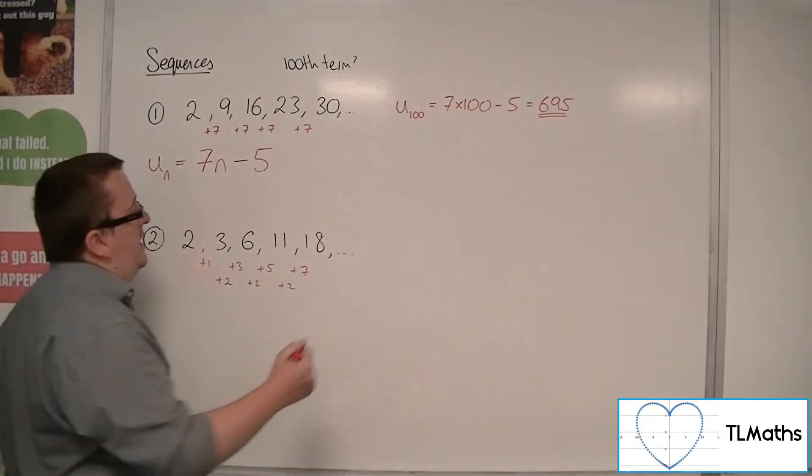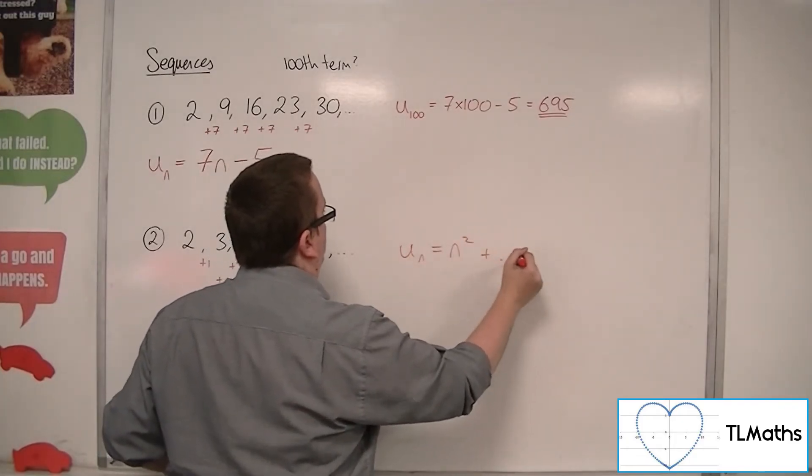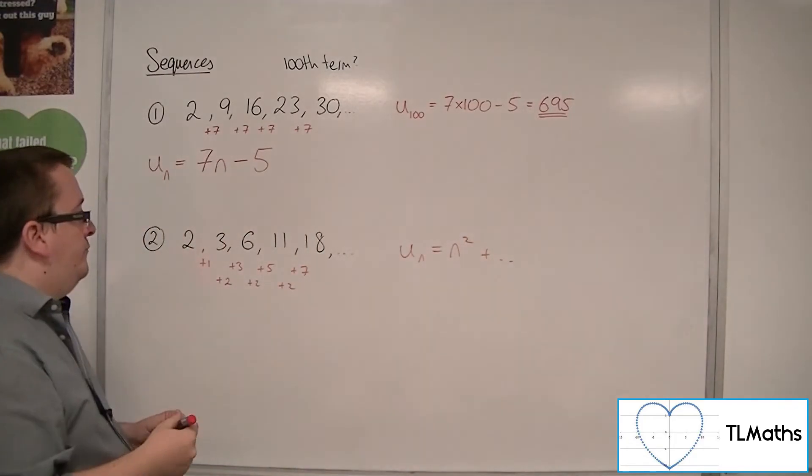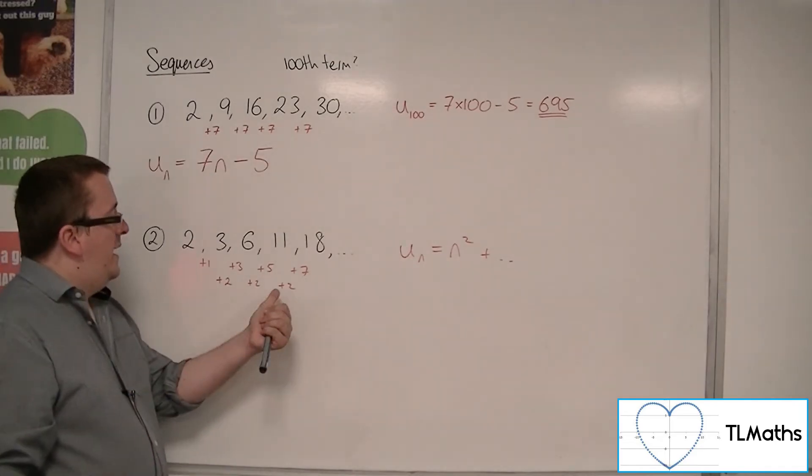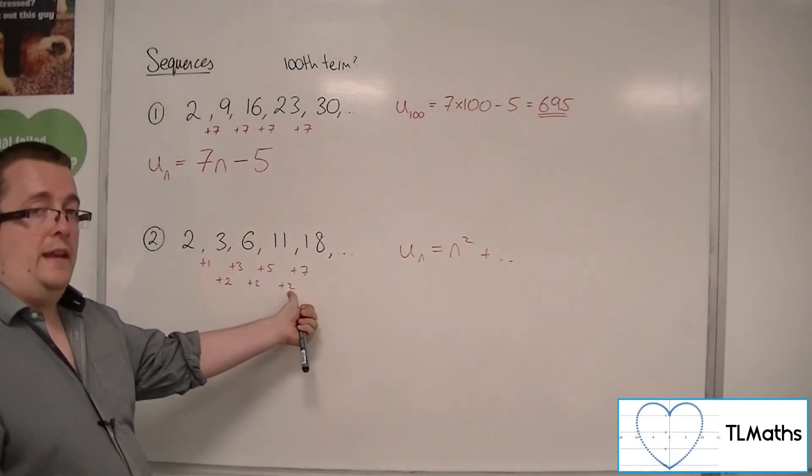So what we need to think about here, we're going to have this n squared plus something, because it is this number here that gets halved, and then that is the coefficient of the n squared.